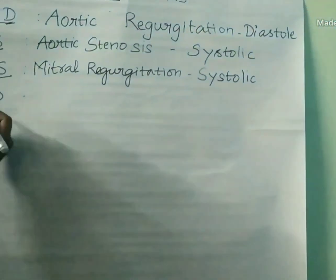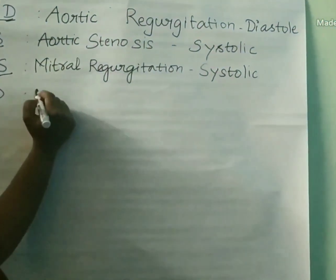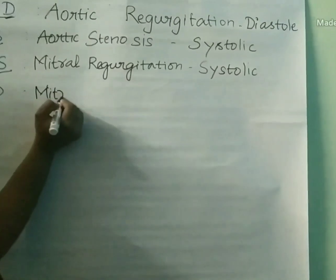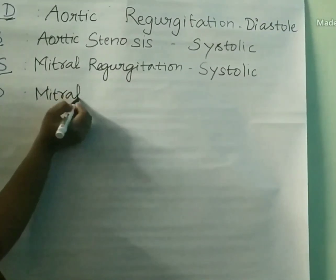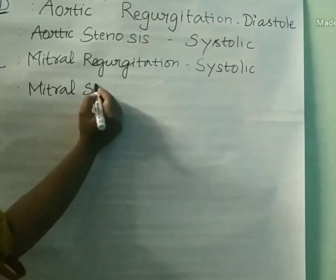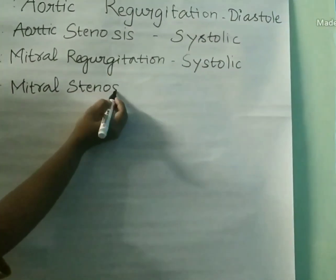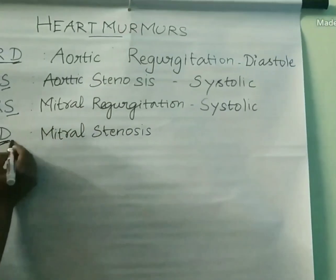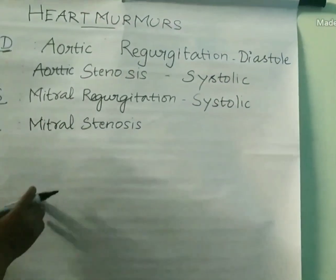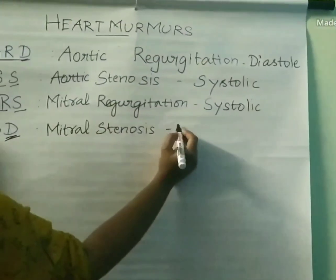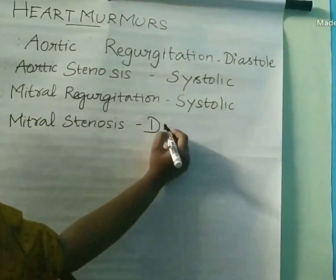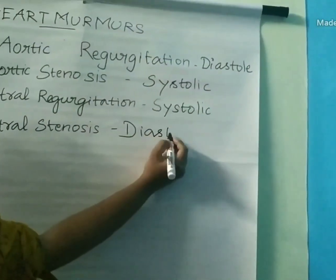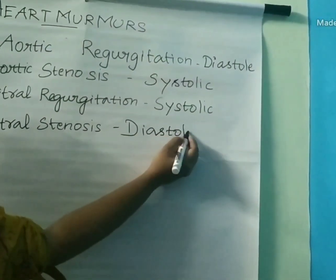Last one, MSD — in which M and S stands for mitral stenosis, and the last letter D stands for diastolic. So in mitral stenosis condition, the murmur seen will be a diastolic murmur.